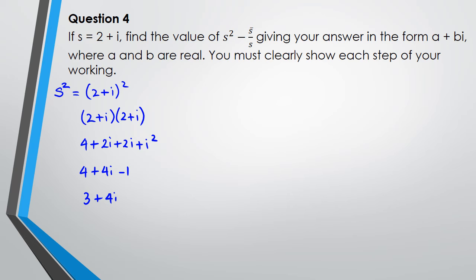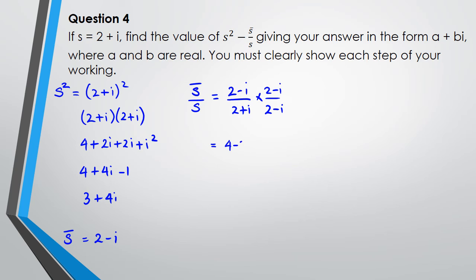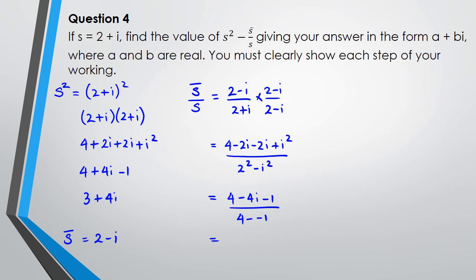The conjugate of s is 2 minus i. Now I work out conjugate(s) divided by s: that's (2 minus i) divided by (2 plus i). I rationalize the denominator by multiplying by (2 minus i) over (2 minus i). Numerator: 4 minus 2i minus 2i plus i-squared, giving 4 minus 4i minus 1, so 3 minus 4i. Denominator: 2-squared minus i-squared equals 4 minus negative 1 equals 5. Result: (3 minus 4i) divided by 5.